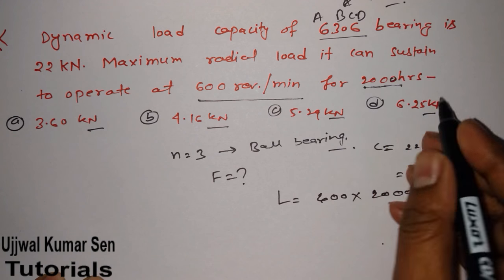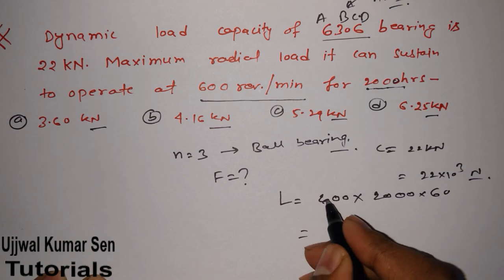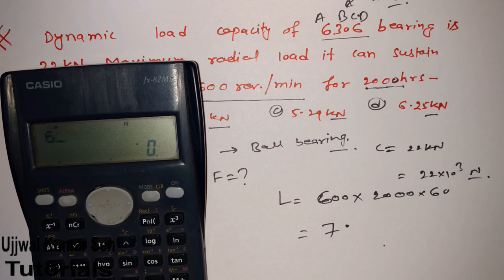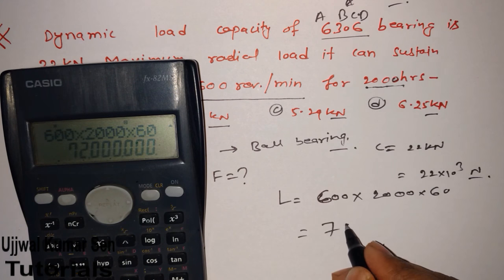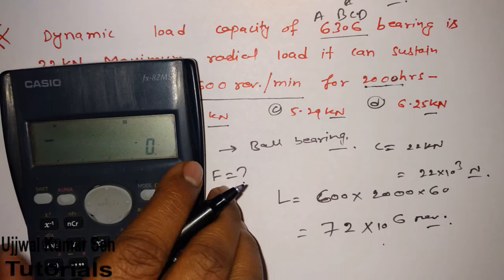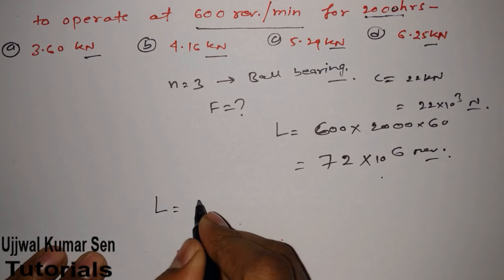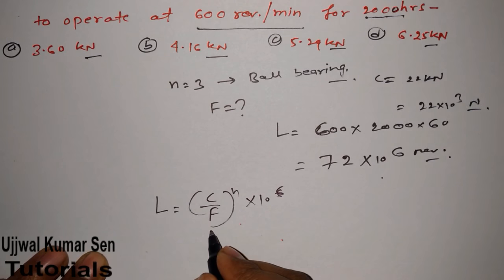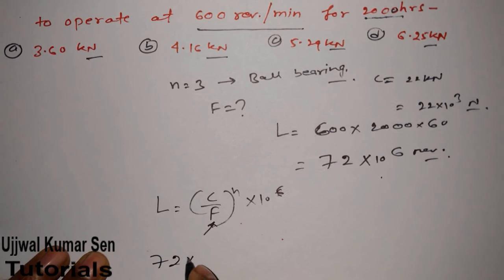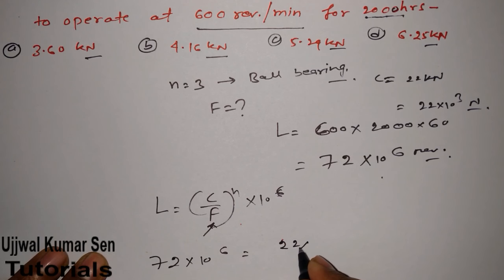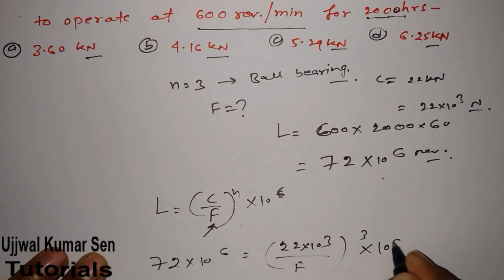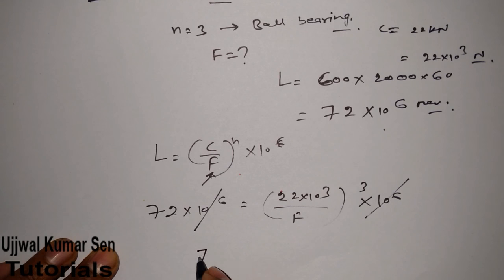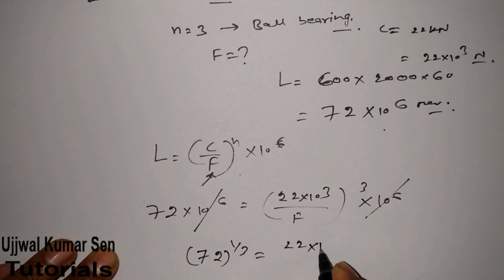First, convert the life from hours to revolutions: L = 600 RPM × 2000 hours × 60 min/hr = 72 × 10^6 revolutions. Now apply the formula: L = (C/F)^n × 10^6. Substituting: 72 × 10^6 = (22 × 10^3 / F)^3 × 10^6. The 10^6 cancels. Taking the cube root of both sides: 72^(1/3) = (22 × 10^3) / F. Rearranging: F = 22 × 10^3 / 72^(1/3).